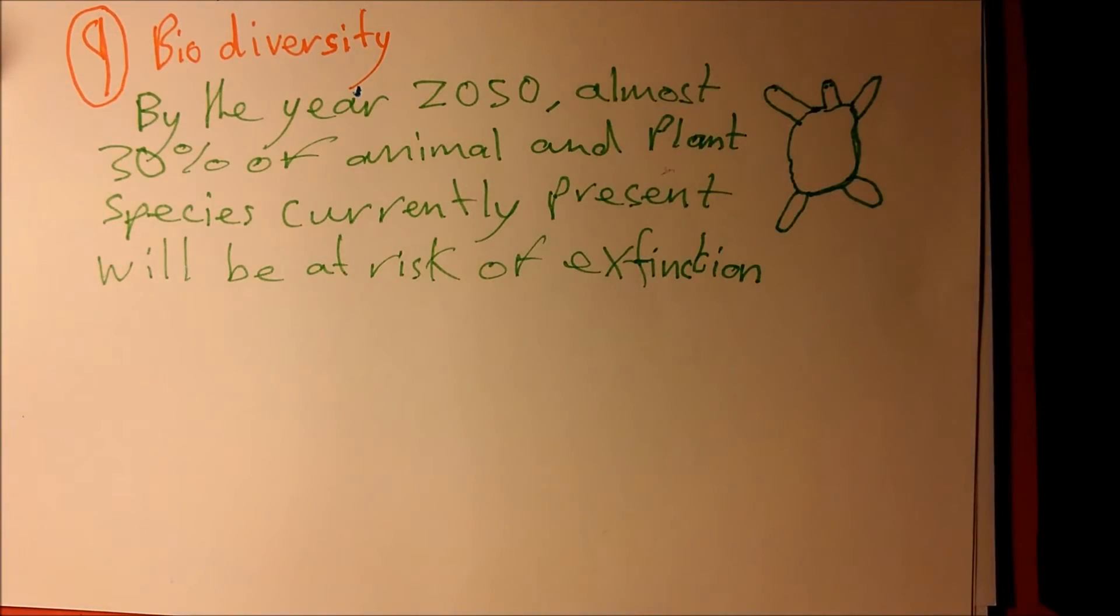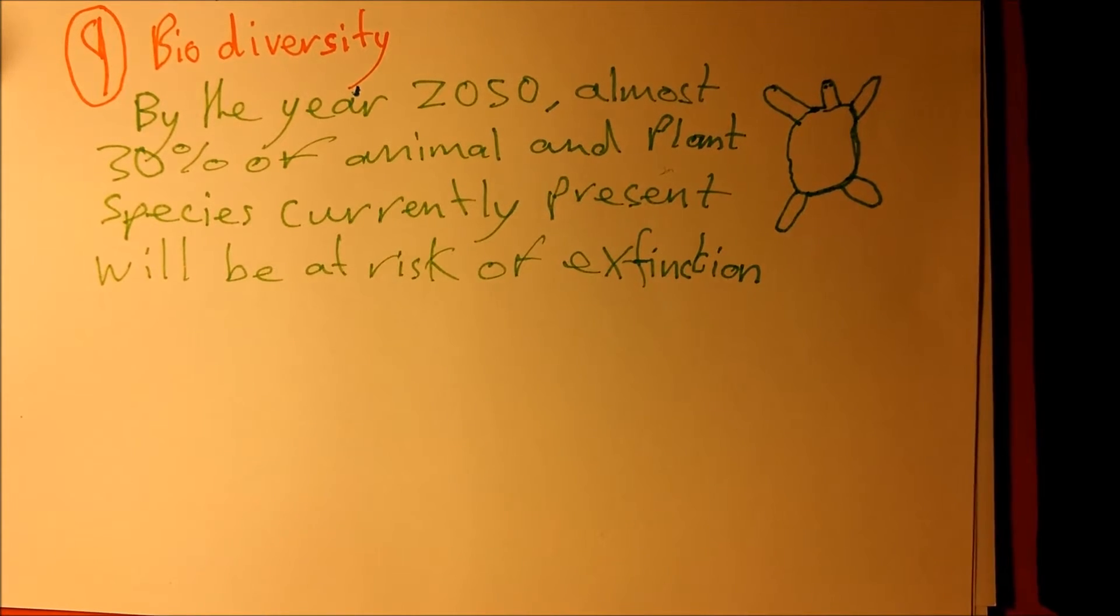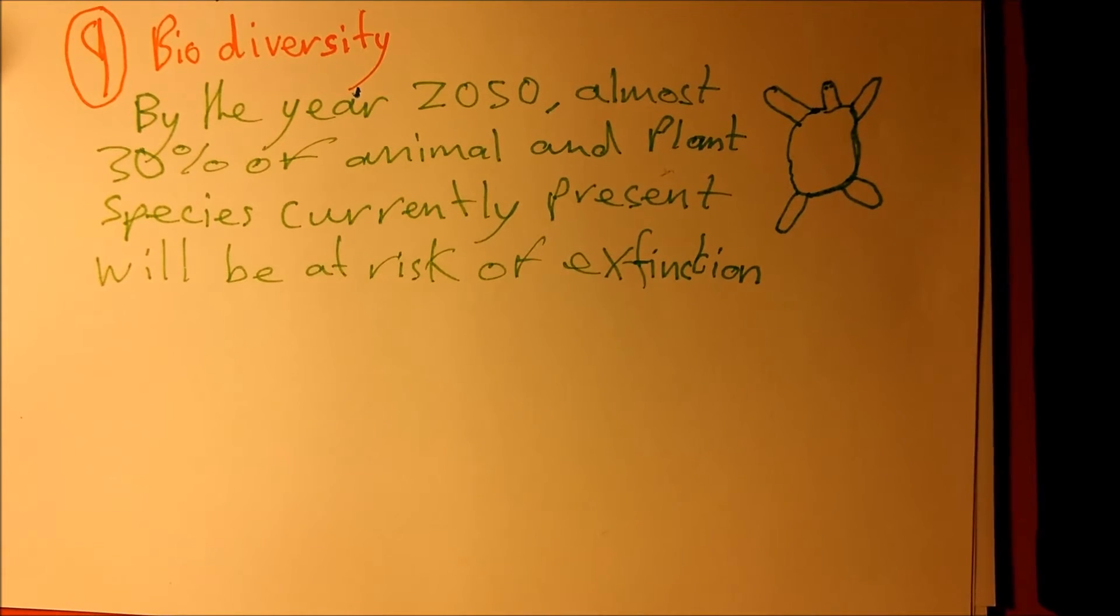Number 9: Biodiversity. By the year 2050, almost 30% of animal and plant species currently present will be at risk of extinction.